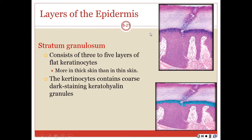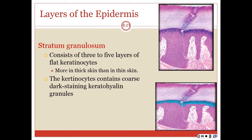The stratum granulosum consists of three to five layers of flat keratinocytes, and they're more abundant in thick skin than in thin skin. The dark-staining keratohyalin granules you see in the diagram are what gave this layer its particular name.